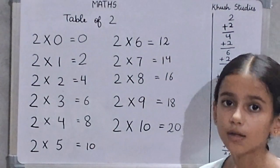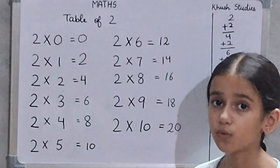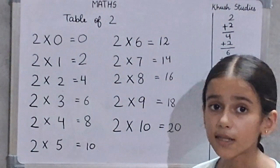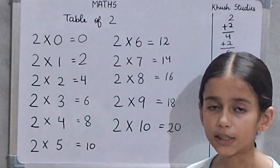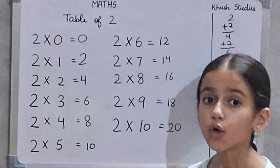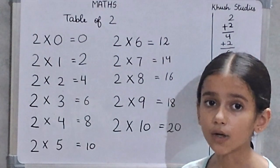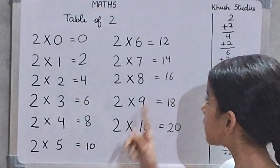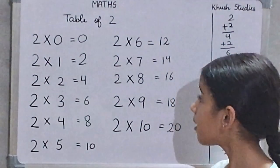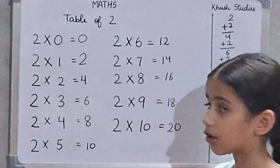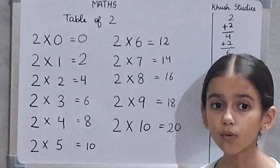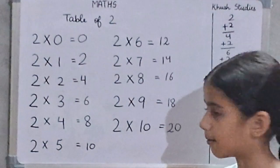2 times 6 are 12. 2 times 7 are 14. 2 times 8 are 16. 2 times 9 are 18. 2 times 10 are 20.